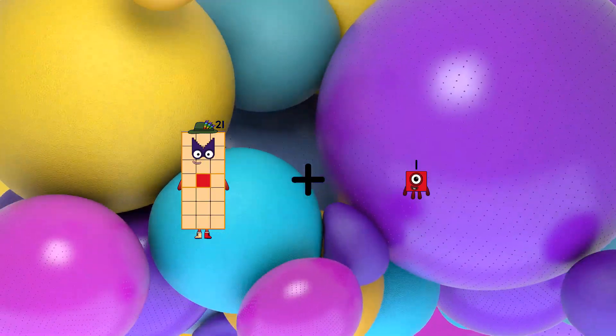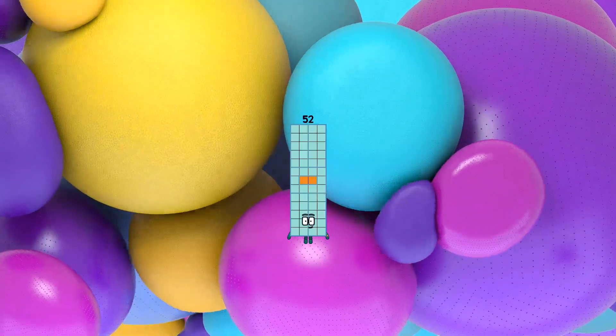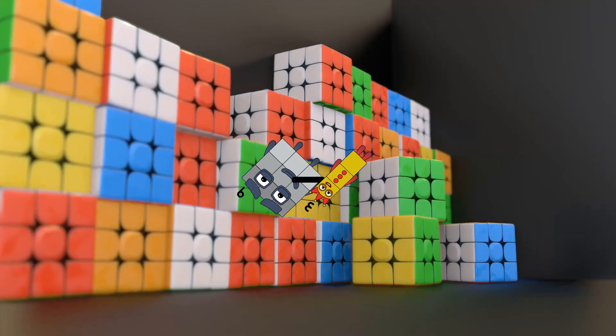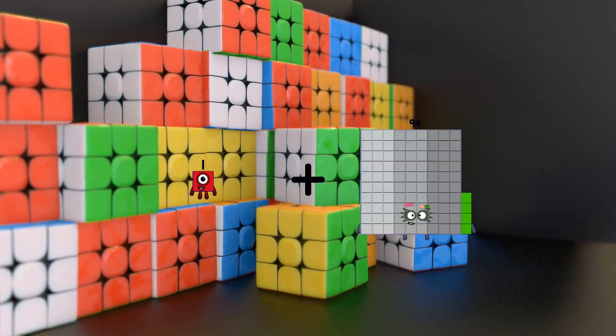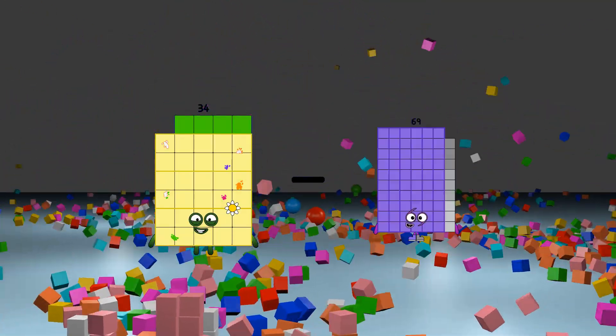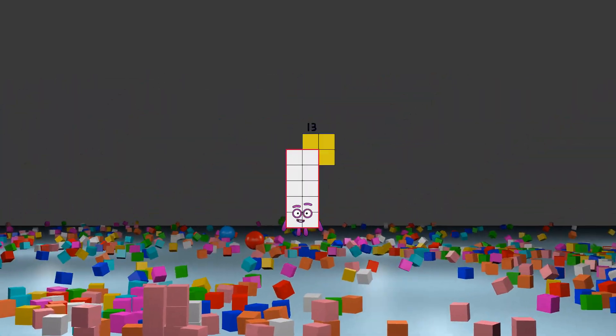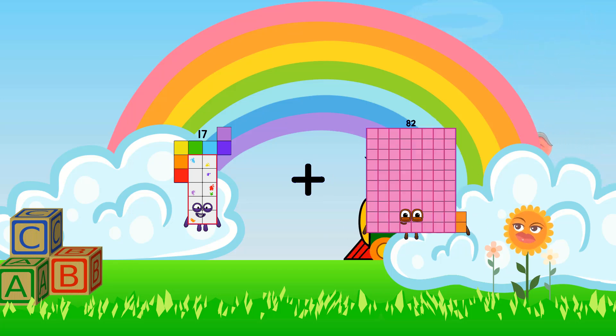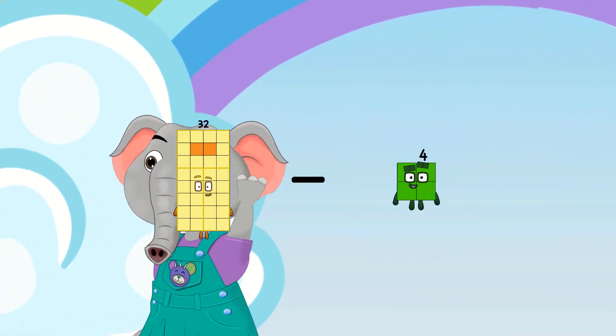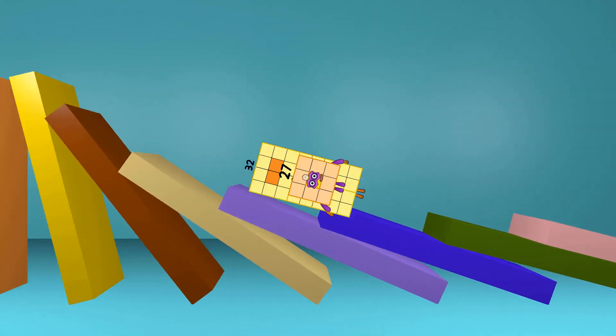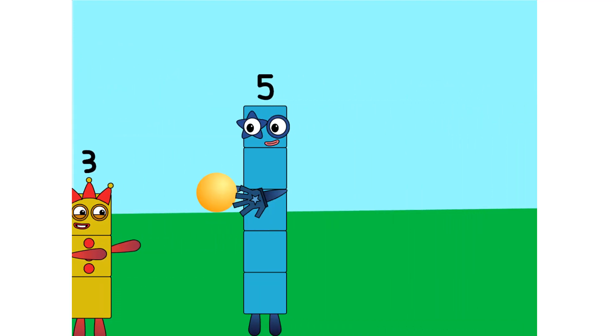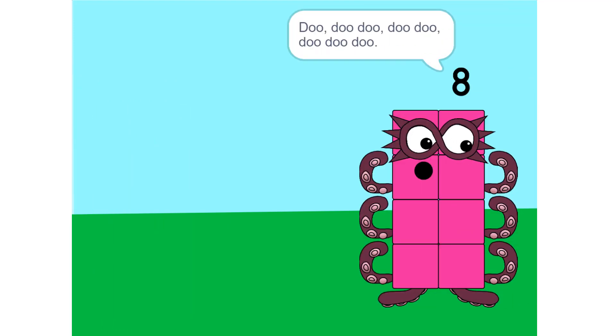21 plus 31 equals 52, 9 minus 3 equals 6, 1 plus 29 equals 30, 34 minus 21 equals 13, 17 plus 29 equals 46, 32 minus 27 equals 5. Do, do-do, do-do, do-do-do.